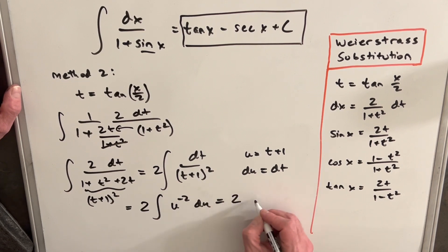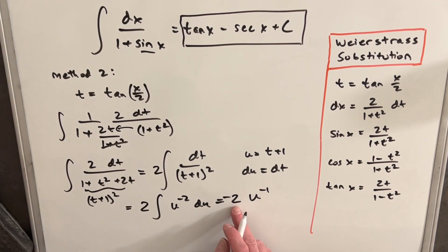Then just integrating, we can, just doing the power rule, we can do this. And so this is just minus two over u, but our u is t plus one. So this is actually minus two over t plus one.